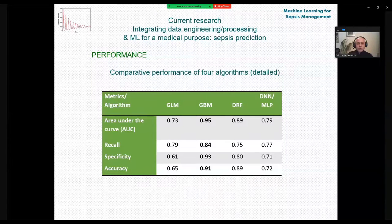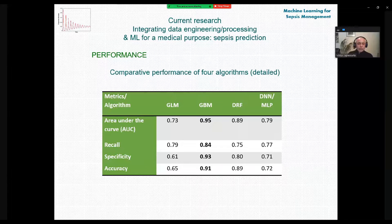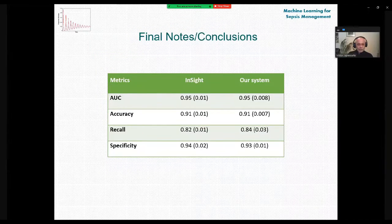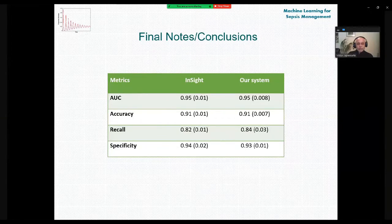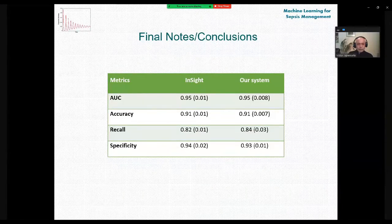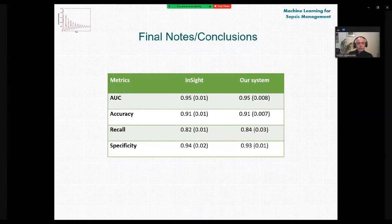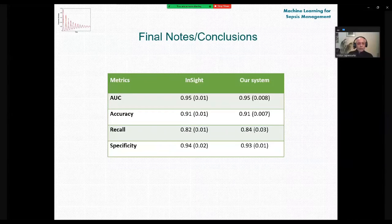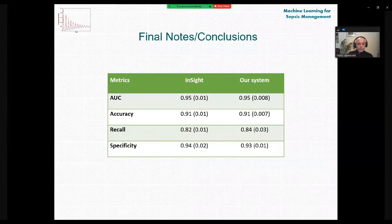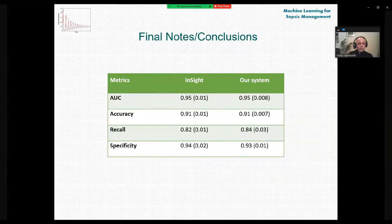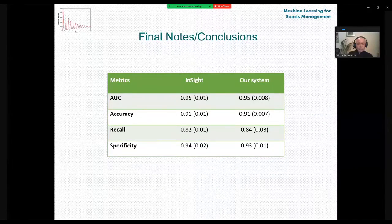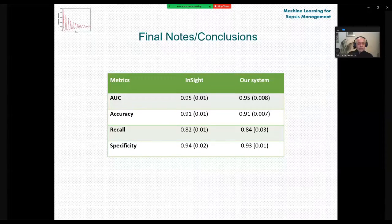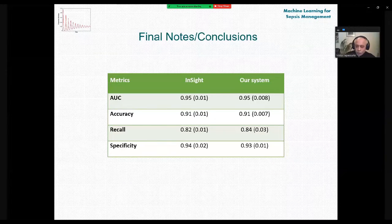And in this table, you can see a more detailed information concerning the performance metrics. And once again, the GBM is the best. And I would like to mention that from the very beginning, we have replicated in R language the InsightML system, originally built in Python language, and used this replica as a benchmark while researching our own system. As you can see, the performance is quite similar, except recall that is 2% higher in our system and specificity that is 2% lower for our system.